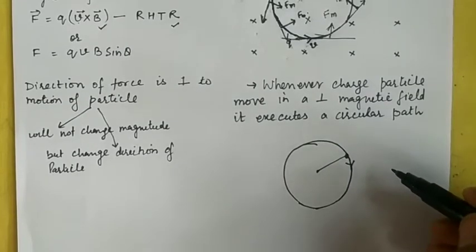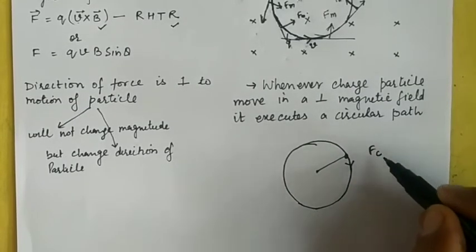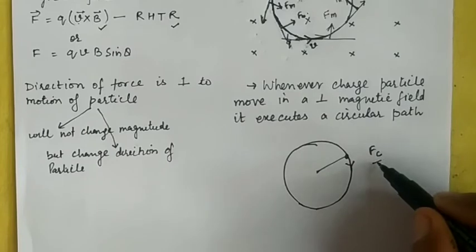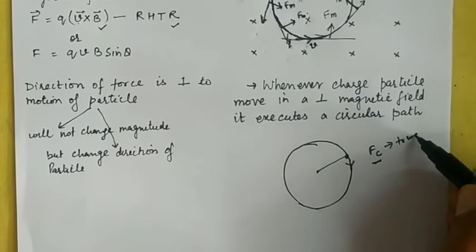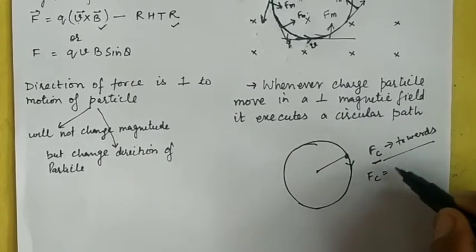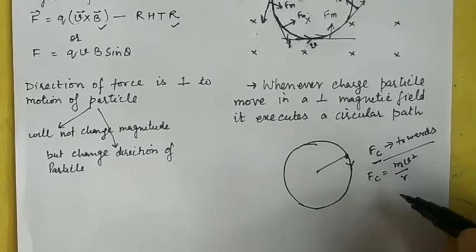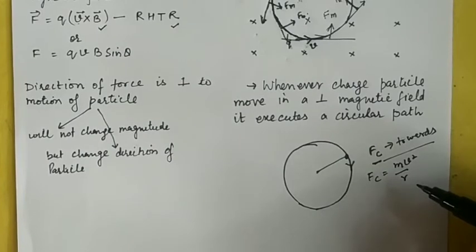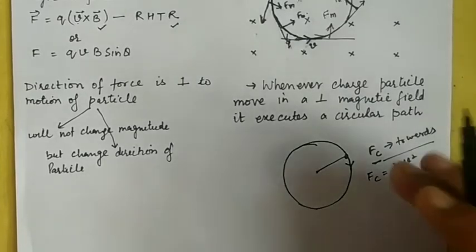We already know that any object moving in a circle experiences a centripetal force directed toward the center. No object can move in a circle without this centripetal force. The centripetal force is given by mv²/r. This centripetal force is not itself a new force — it is provided by other forces such as tension, gravity, electrostatic force, or in this case, magnetic force.